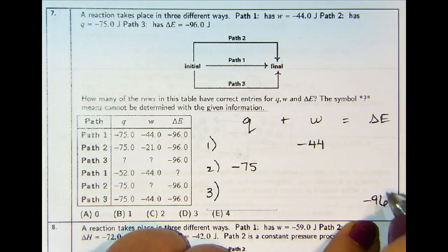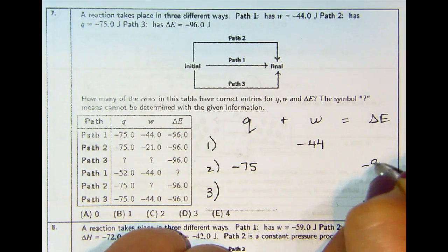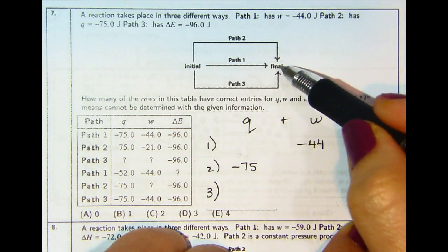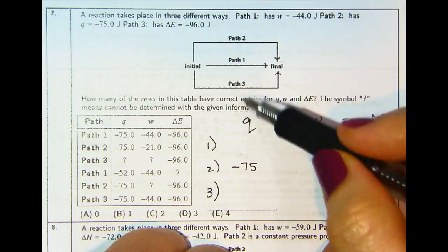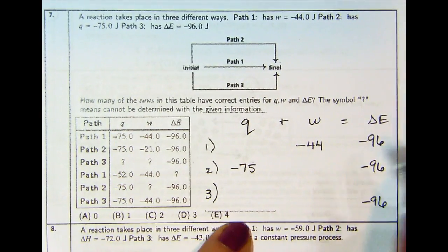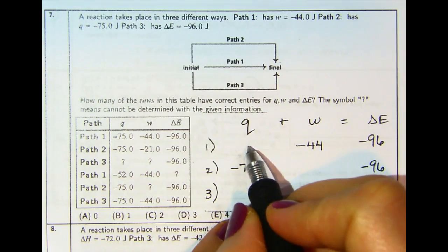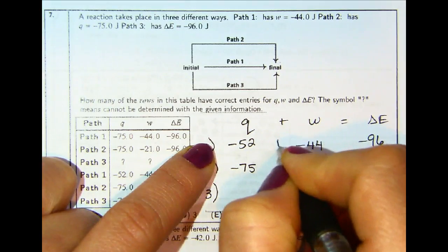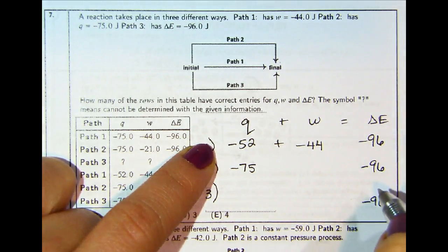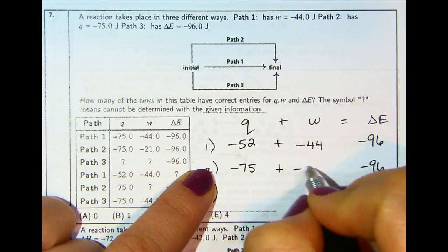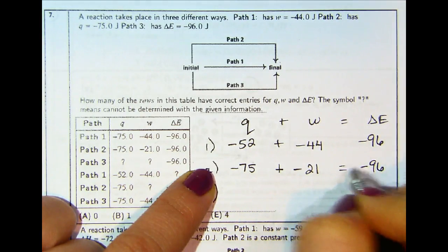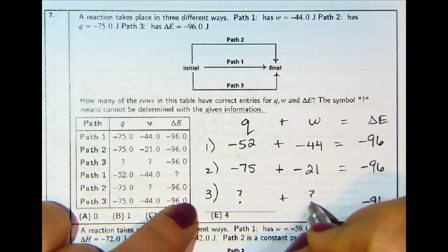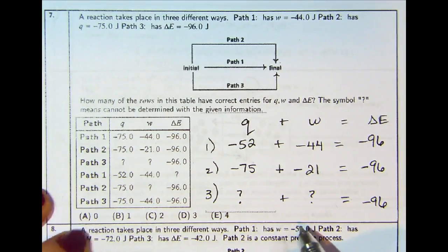Delta E is a state function, which means it's going to be the same for all three paths — meaning all paths end with negative 96. We have to use the equation to solve for Q and W. For path one: Q would have to be negative 52, since negative 52 plus negative 44 equals negative 96. For path two: negative 75 plus negative 21 equals negative 96. For path three, we don't know Q or W, so we cannot figure out those two values.